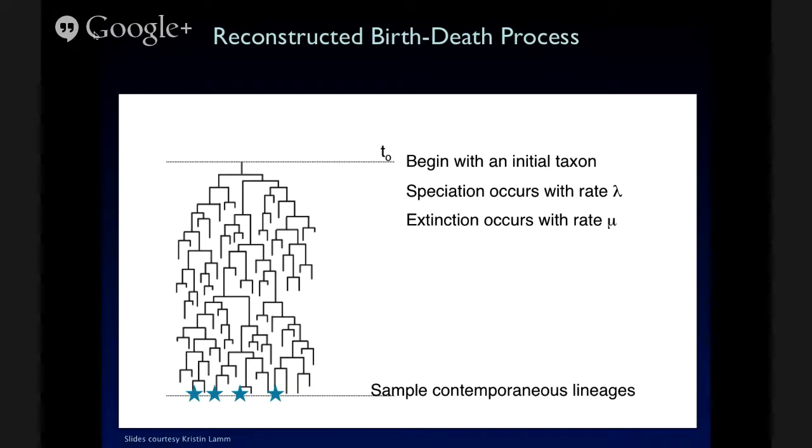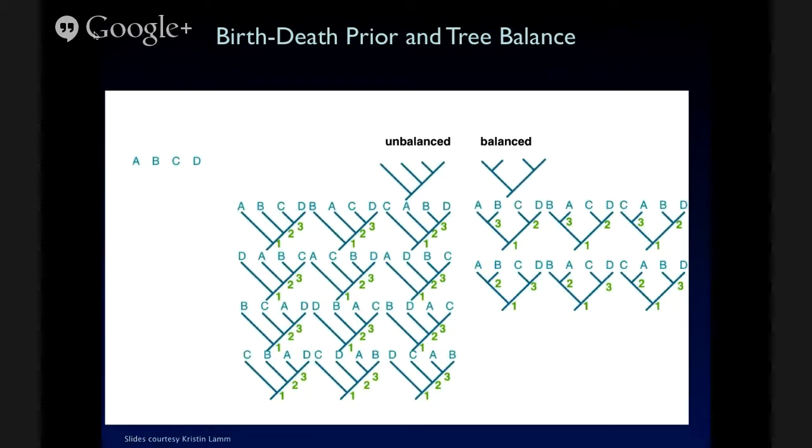So, programs like Mr. Baste and Beast currently let you choose from a variety of tree priors, but for a long time, the uniform prior was the only one available, not because it's particularly biologically meaningful, but because it's easy to implement. And it's still actually fairly widely used in studies. So, let's take a look at our taxon scenario again.